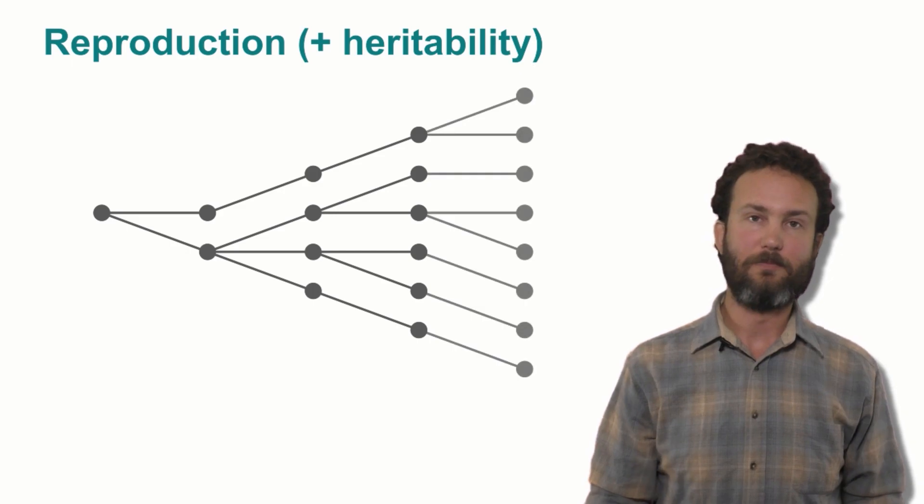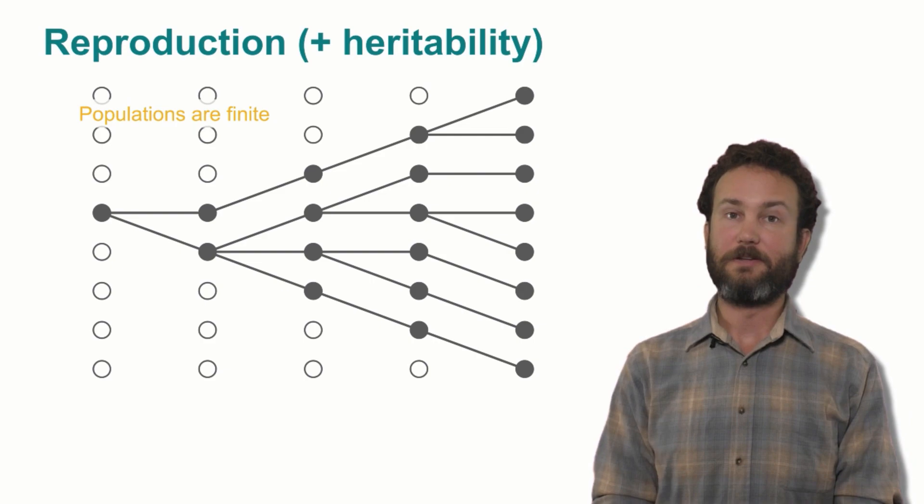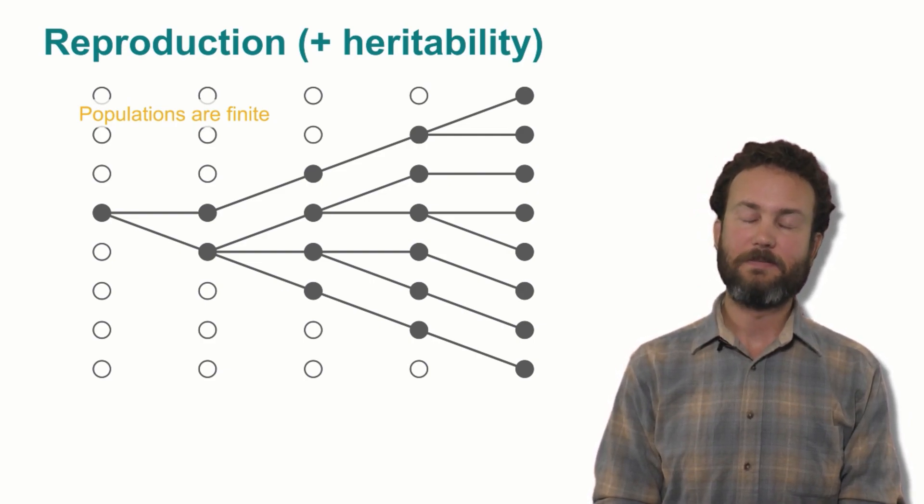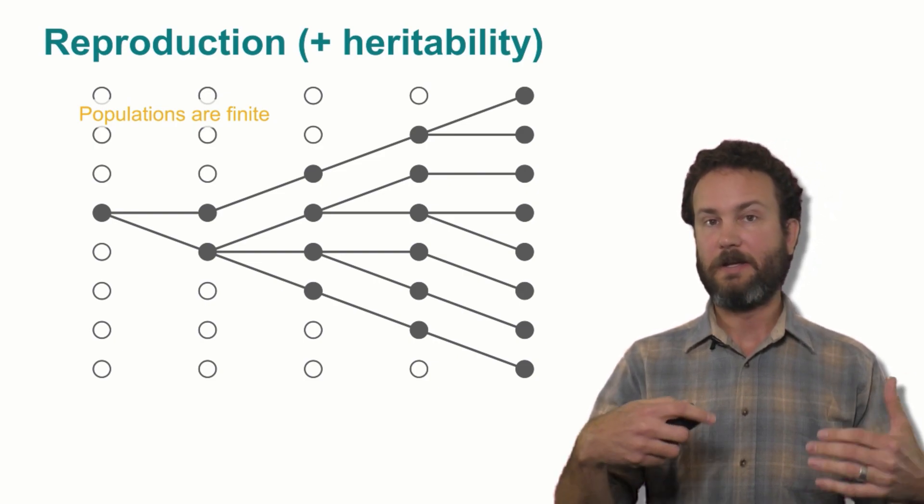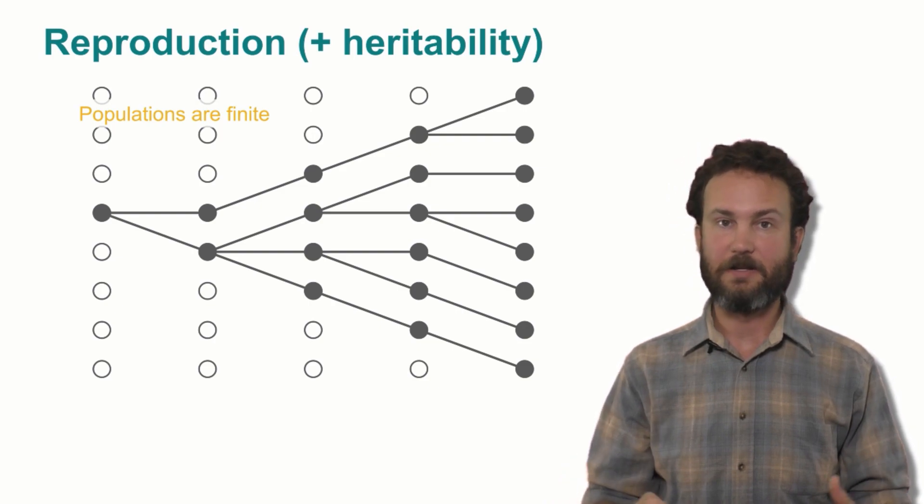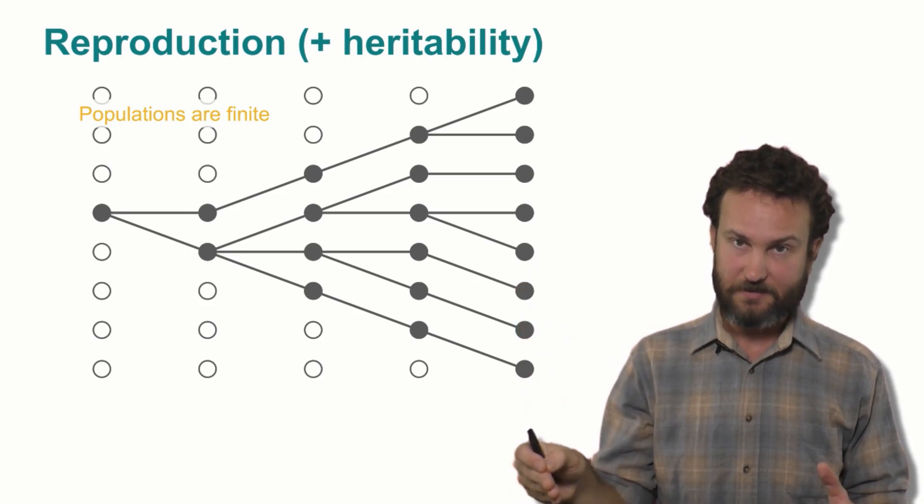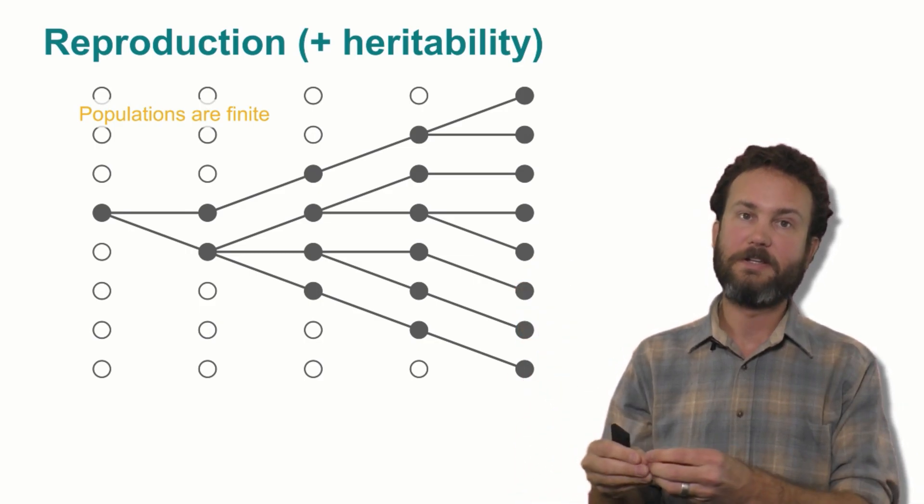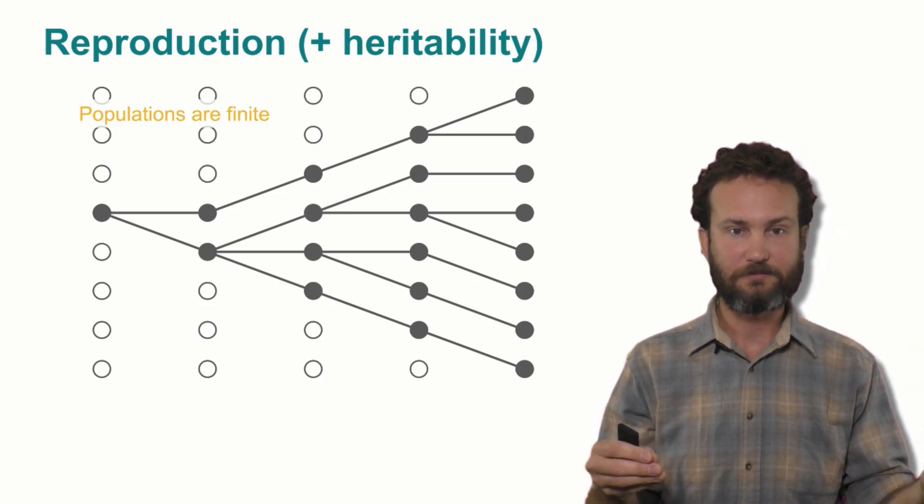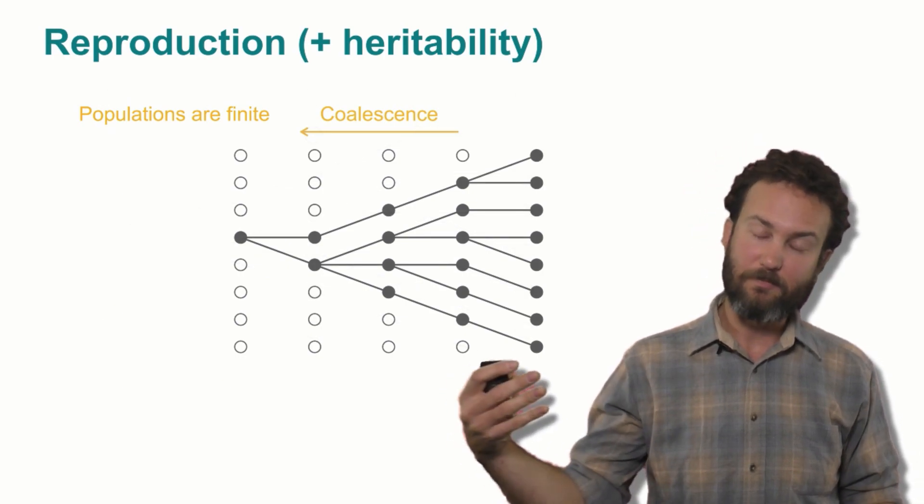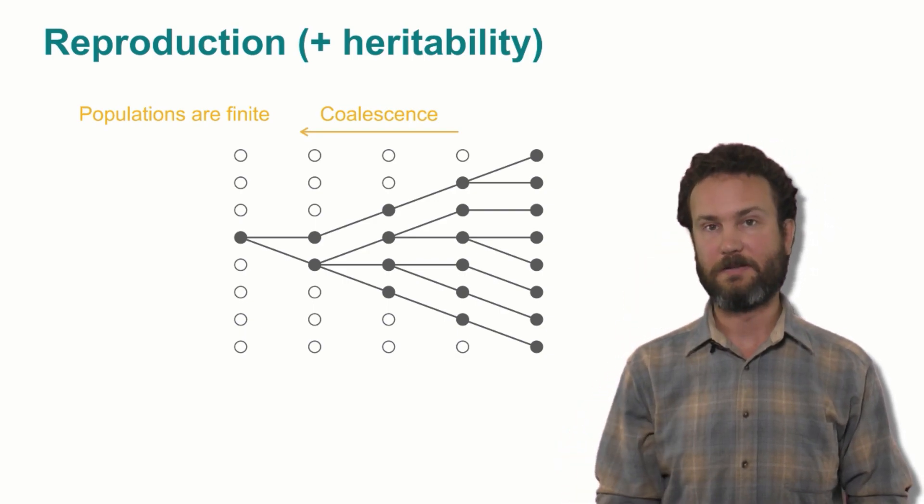So reproduction proceeds. We get more and more individuals through time. But one key characteristic of the Earth is that it's finite, and so our populations are similarly finite. What this means is that, for example, in this case of a hypothetical population of eight individuals, over the course of five generations, all the individuals present in the present moment trace their ancestry back to a single individual only five generations ago. This perspective of looking backward and tracing ancestry backward in time is very powerful, and it's called coalescent theory.